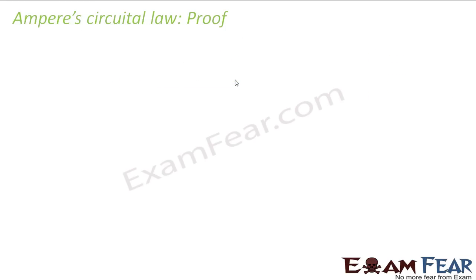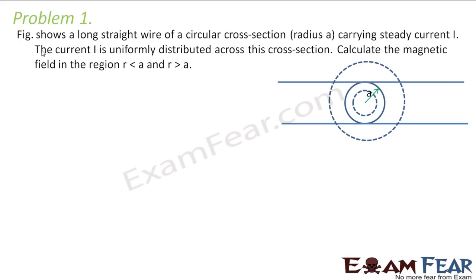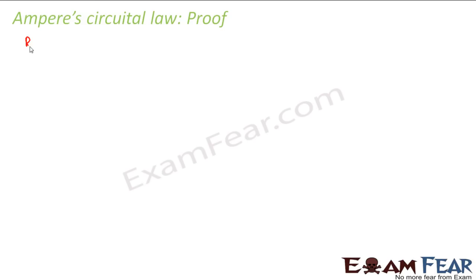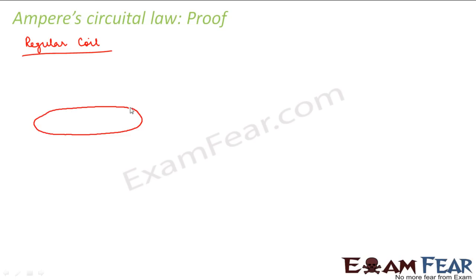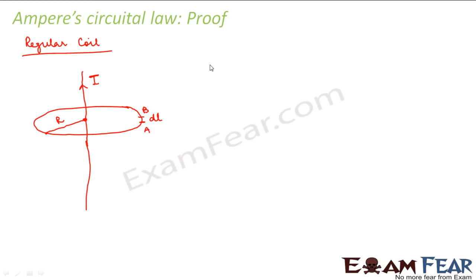Now we will try to prove Ampere's Circuital Law. In the first scenario, I consider a regular circular coil — a current-carrying conductor carrying some current I. I have drawn an Amperian loop surrounding this conductor, and the radius of this Amperian loop is R.